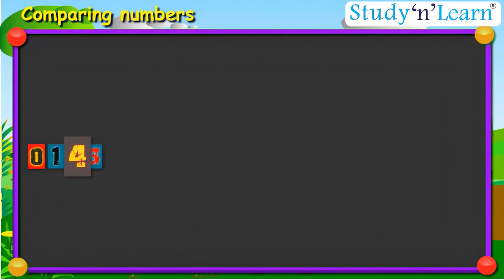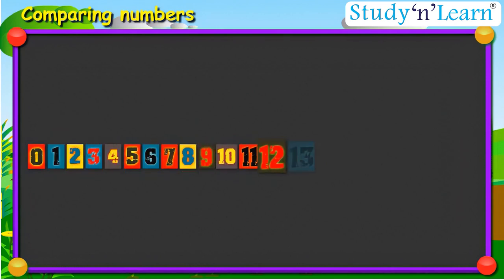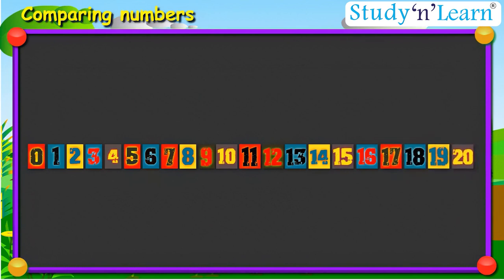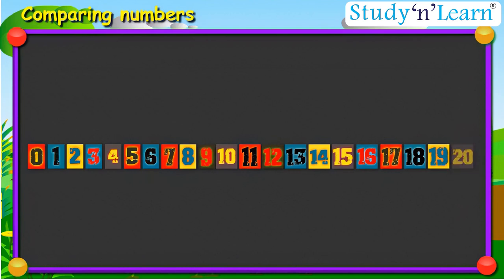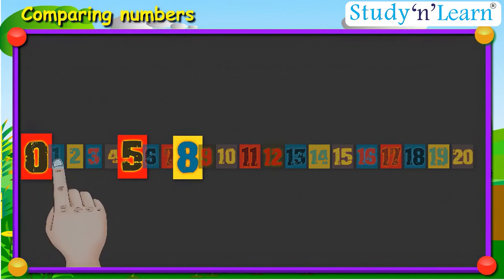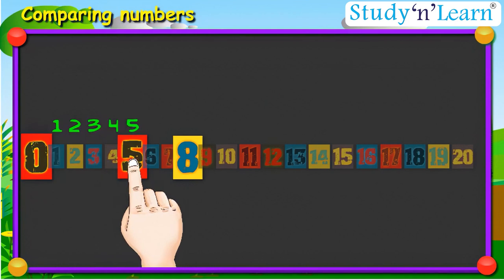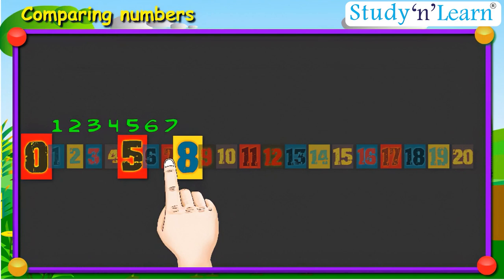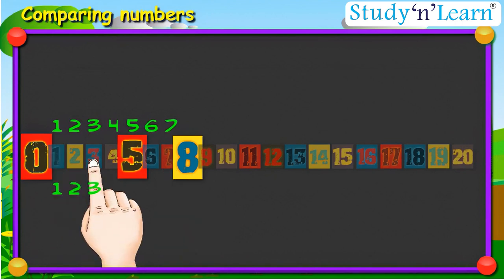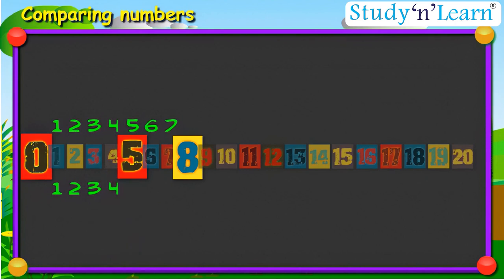Now let us learn to find the bigger number with the help of the number strip. Here we have a number strip. Children, it is important to remember that the number that is farther away from zero is the bigger number. For example, while comparing 5 and 8, 8 is 7 steps away from zero, while 5 is 4 steps away from zero.